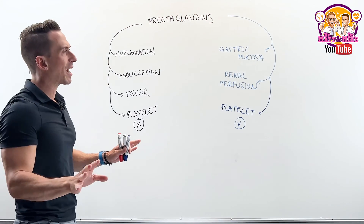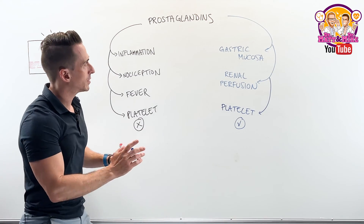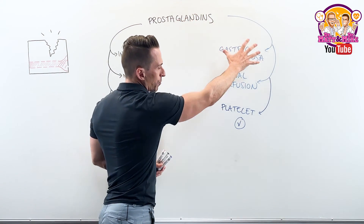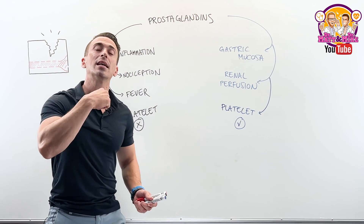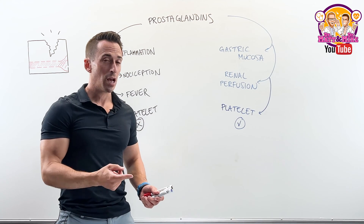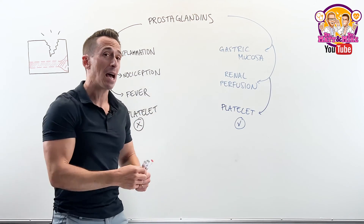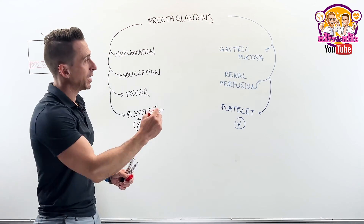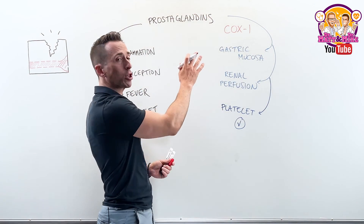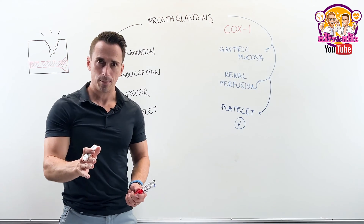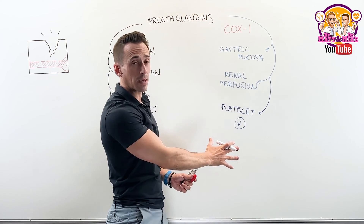Here's one of the major differences. The prostaglandins that perform housekeeping functions are constitutively activated — meaning they're continuously being produced, always on. And the reason this is happening is because of a very important enzyme called COX-1, which stands for cyclooxygenase-1. It's the enzyme that allows us to create the prostaglandins performing these housekeeping functions.